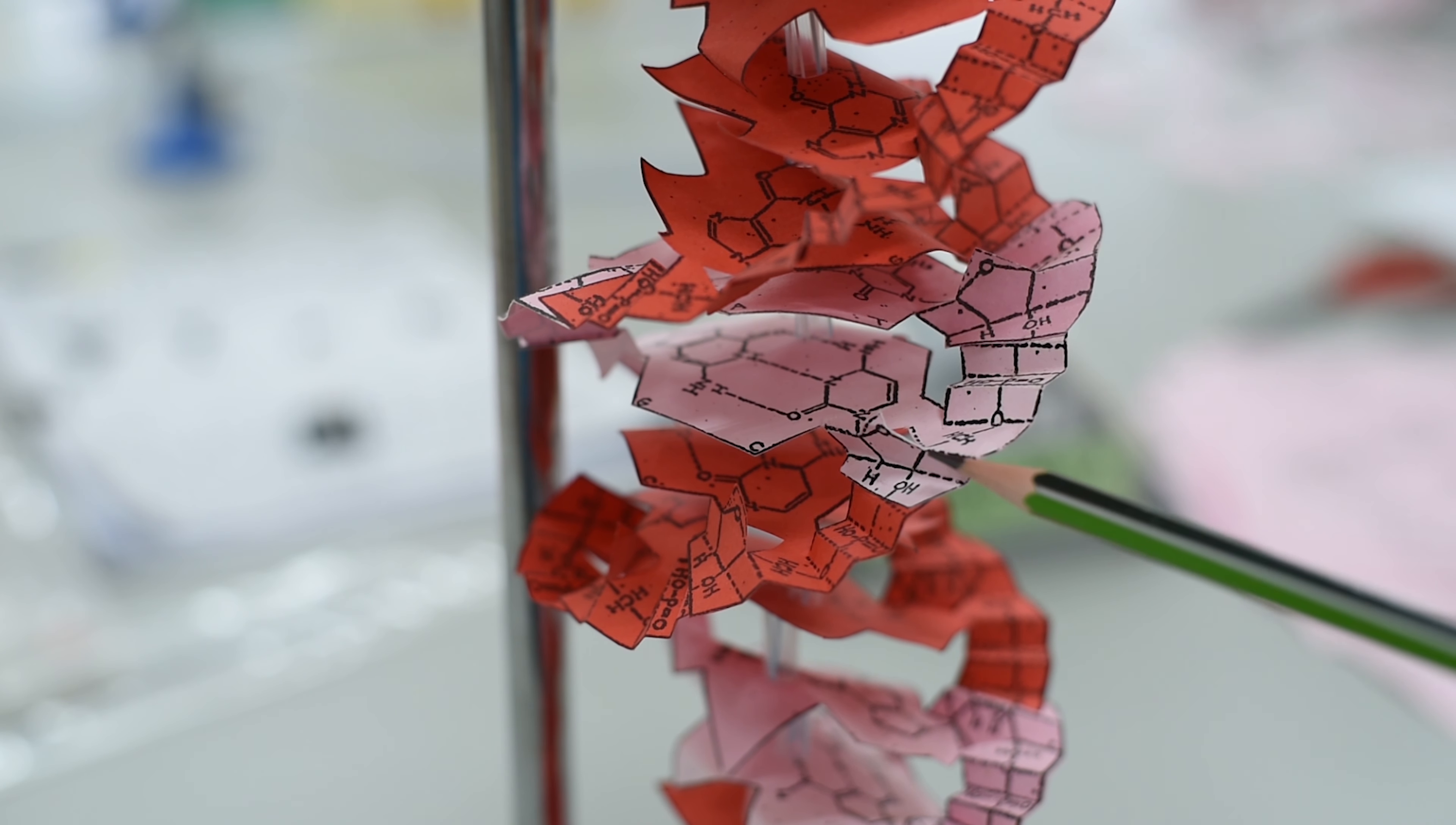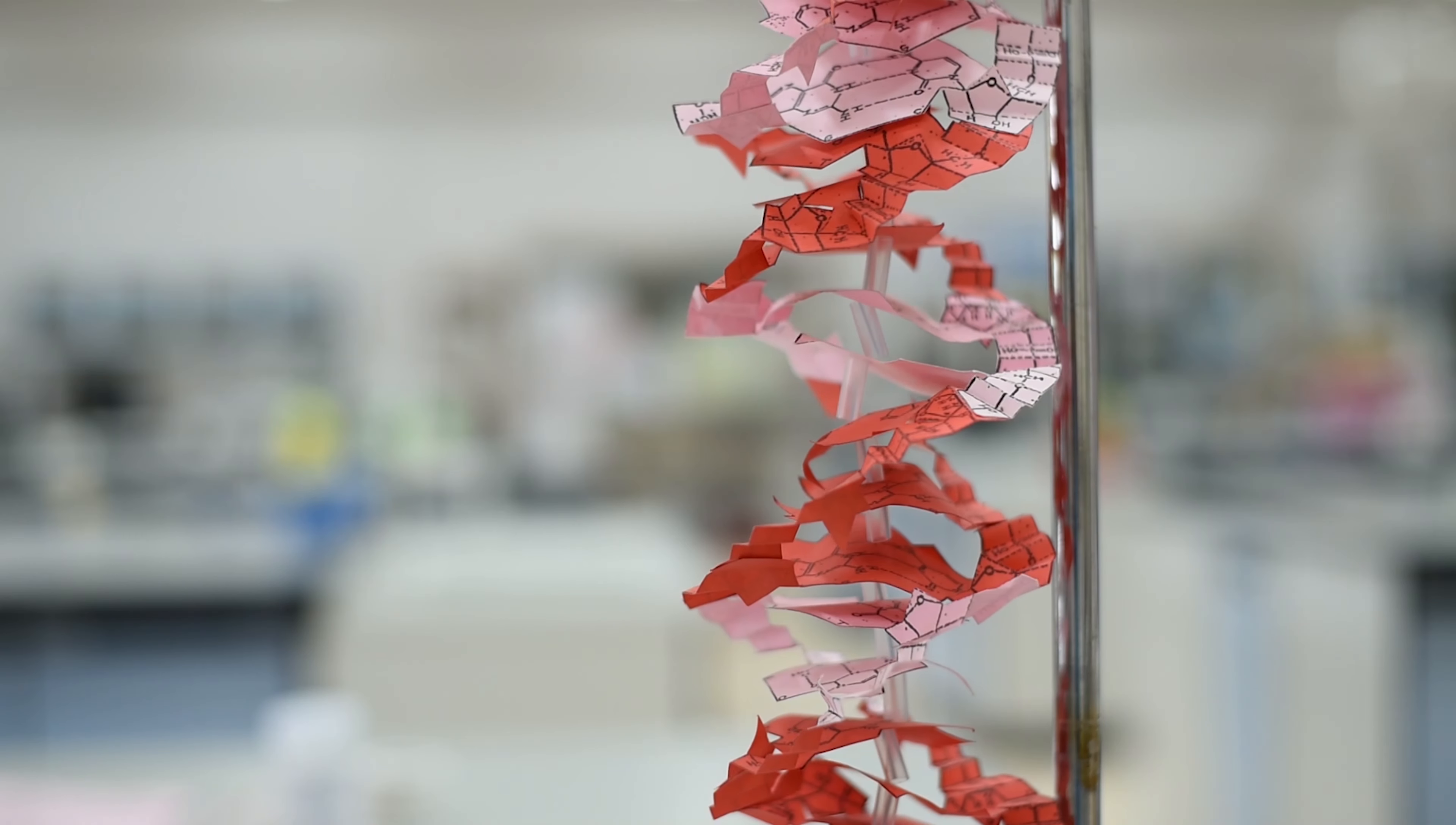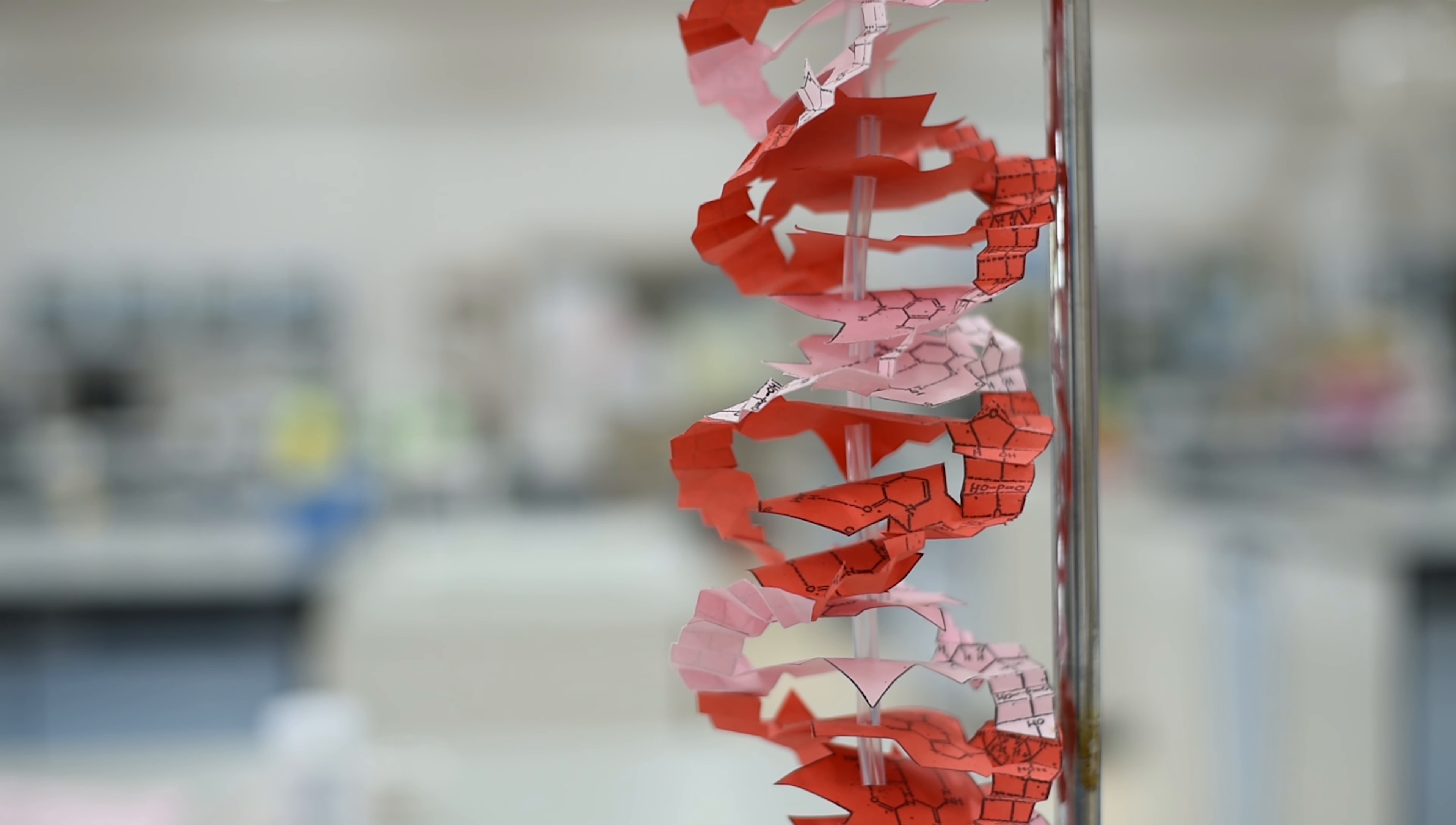And as you know, the DNA model is anti-parallel, so for the other side you need to glue the three prime of the lower part to the five prime of the upper part. You need to keep doing this until your DNA model is complete just like this.